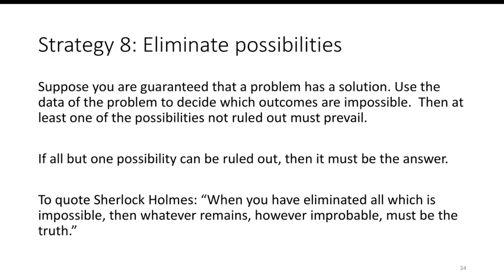The final strategy we will look at is to eliminate possibilities. Suppose you are guaranteed that a problem has a solution. We use the data of the problem to decide what outcomes are impossible. Then at least one of the possibilities not ruled out must prevail. And if you can rule out everything except for one possibility, then that one possibility must be the answer.